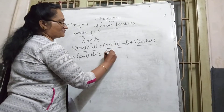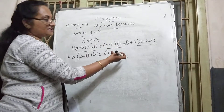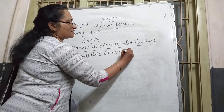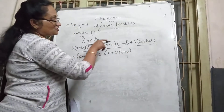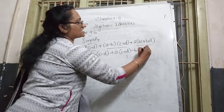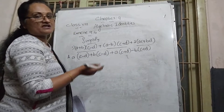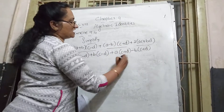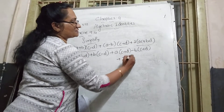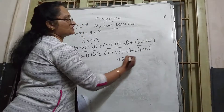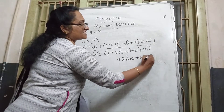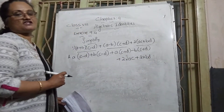First term is completed. Next, we go to the second term. There are also two brackets. Take the first term of the first bracket — that is a — and multiply with the second bracket (c + d). Then with its sign, the second term minus b is multiplied with the second bracket (c + d). Second term also completed.